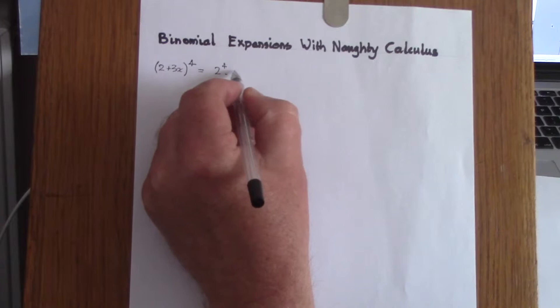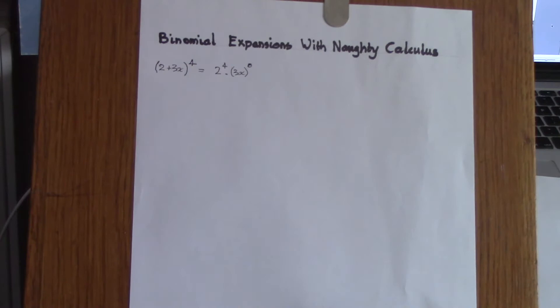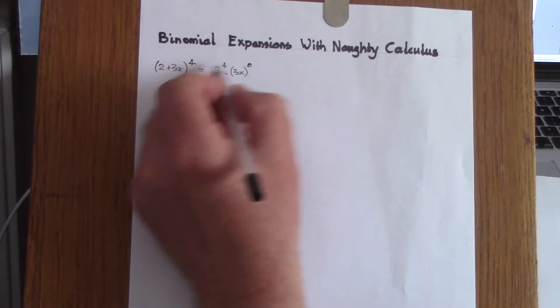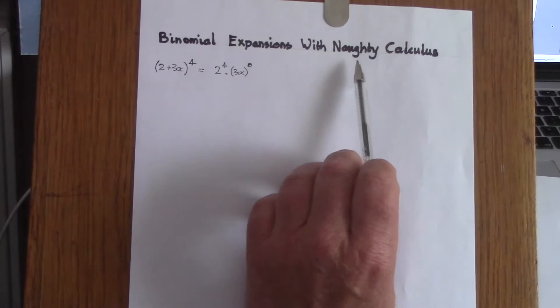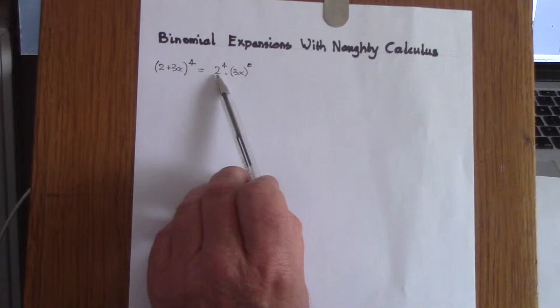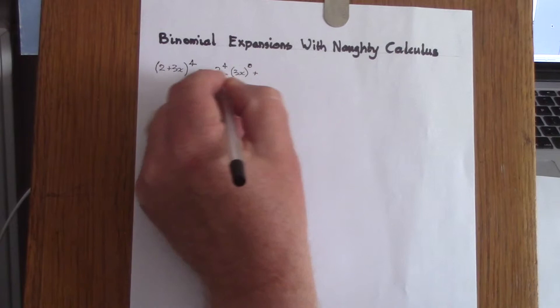We multiply that by the second term to the power of 0 — that gives us the first term. The second term is obtained by differentiating 2 to the power of 4. What I mean by the 'naughty calculus' is that this 2 is being treated as a differentiable entity, so we differentiate 2 to the power of 4.